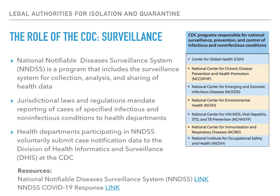The National Notifiable Diseases Surveillance System, known as NNDSS, is a program that includes a surveillance system for collection, analysis, and sharing of health data, as well as policies, laws, electronic information systems, processes, and resources at the local, state, territorial, and national levels. It's used by about 3,000 public health departments across the U.S. to monitor, control, and prevent about 120 diseases. Notifiable disease surveillance begins at the level of local, state, and territorial public health departments. Health departments participating in NNDSS voluntarily submit case notification data to DHIS — the CDC Division of Health Informatics and Surveillance — which receives, secures, processes, and provides nationally viable infectious disease data to disease-specific CDC programs.